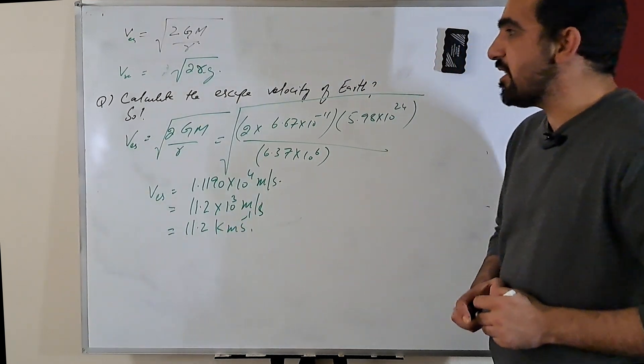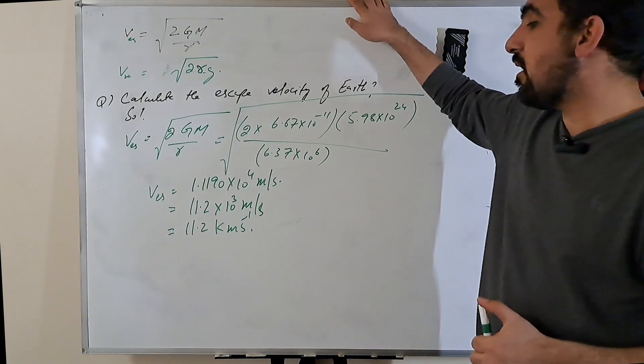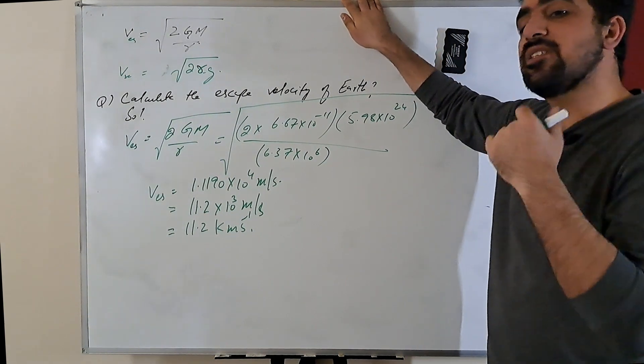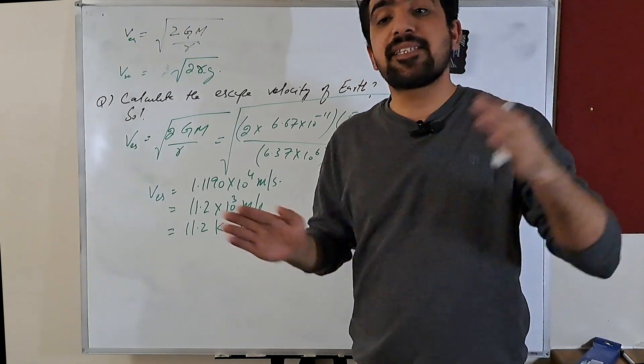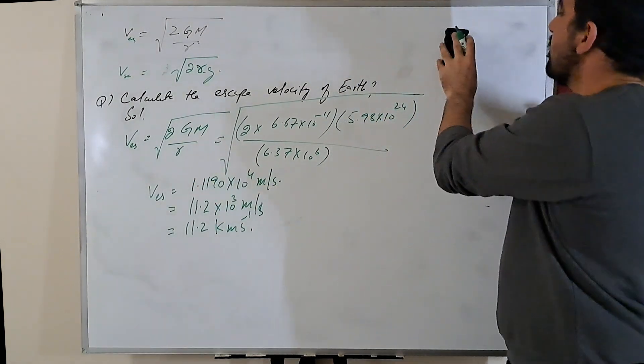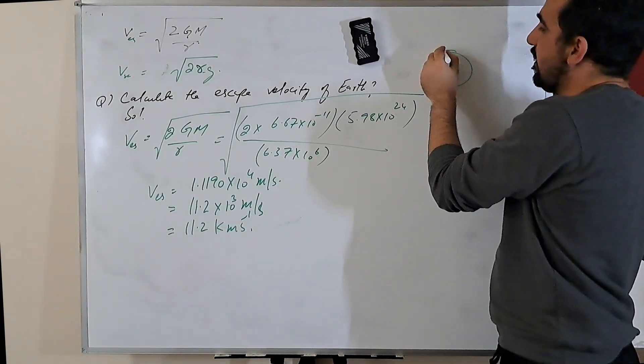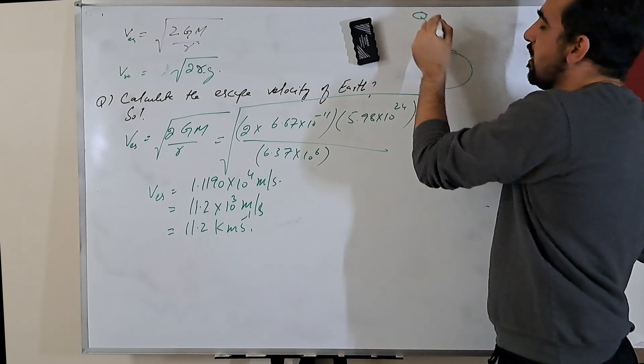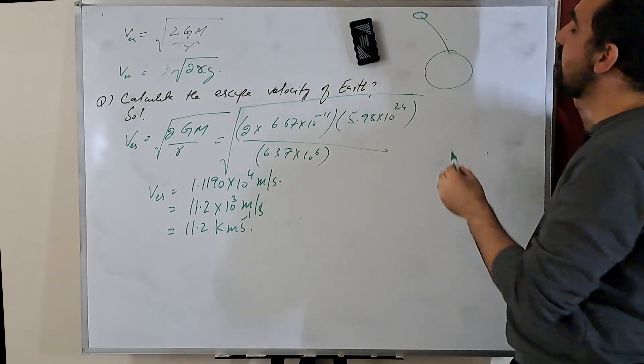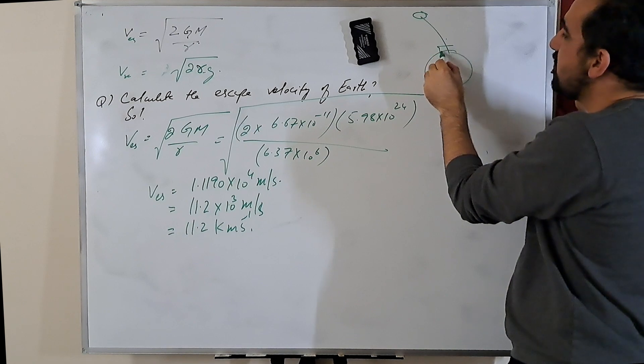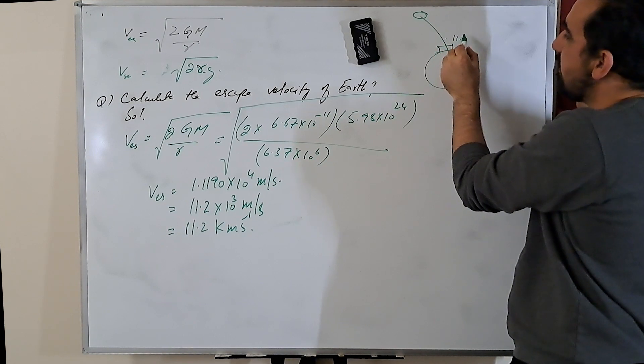So if any object is given the speed of 11.2 kilometer per second on the surface of Earth, it will escape the gravitational field. So if we need to send up any object out into outer space, out of the gravitational field, how much initial speed it requires?